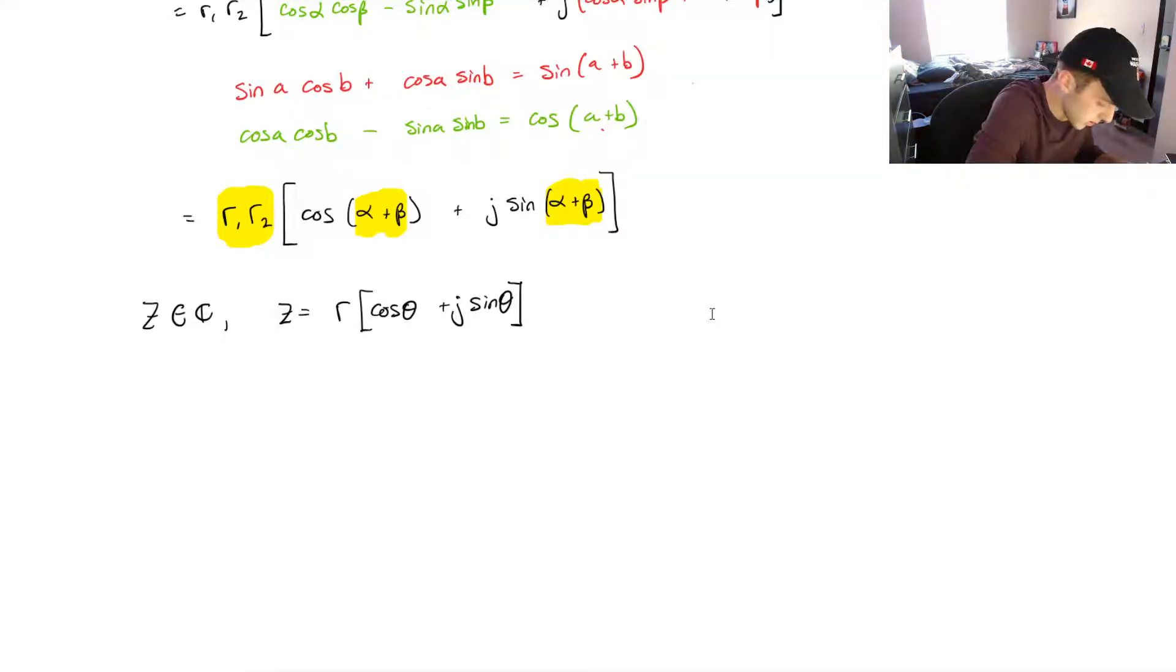So, if we took z and we multiplied it by z, then we would get r squared. We've got r times r, and then we just told ourselves that we add the angles together. And they're both theta in this case.